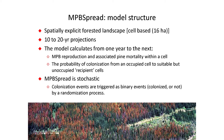Mountain Pine Beetle Spread is the model, and it's effectively a spatially explicit model that works on a forested landscape divided into 16 hectare cells. It's capable of projections into the future of one or two decades. It calculates from one year to the next mountain pine beetle reproduction and associated pine mortality within a given cell, and most importantly calculates the probability of colonization from an occupied cell to a suitable but unoccupied recipient cell. It's a stochastic model where colonization events are triggered as binary events — either colonized or not — via a randomization process, allowing Monte Carlo runs to produce means and confidence intervals.